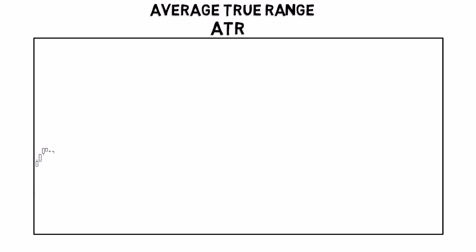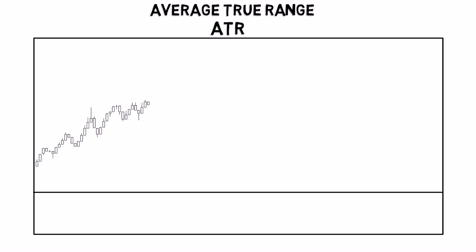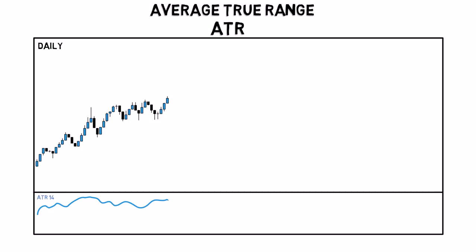The Average True Range, or ATR, is a volatility indicator. It measures the range of the session in pips and then determines the average of that range over a certain number of sessions. For example, if using a daily chart with a default setting of 14, the ATR will measure the average daily range from high to low of the previous 14 days.